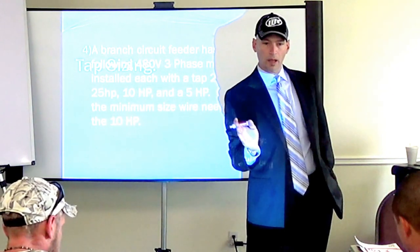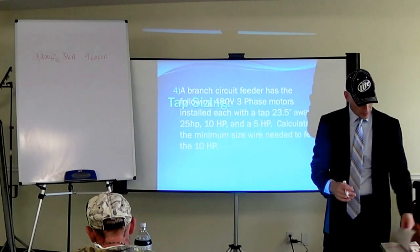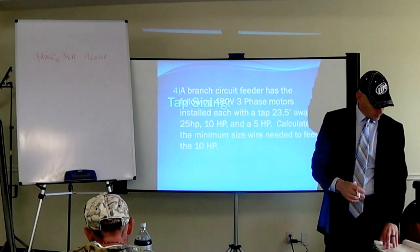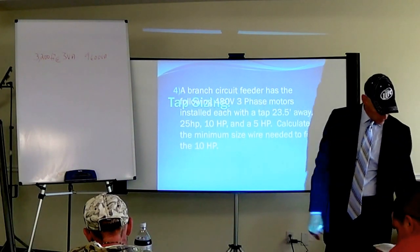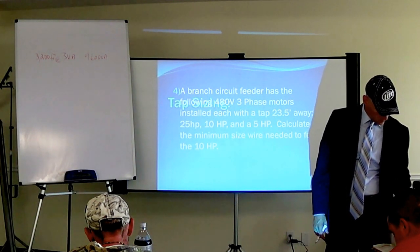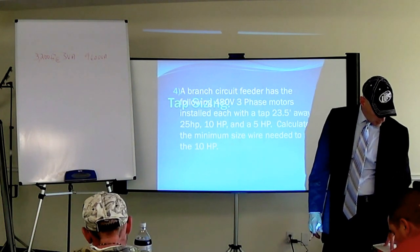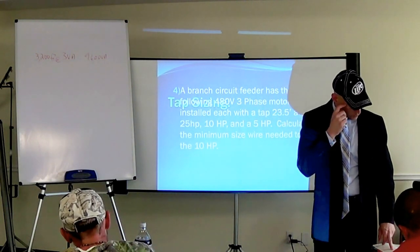And if you're following along with the line items in B there, you'll see that B1, I believe, is the same, basically the same notes. So B1 is the 3 VA per square foot.